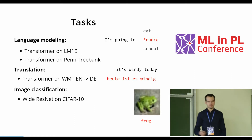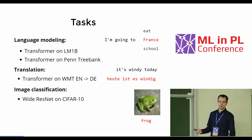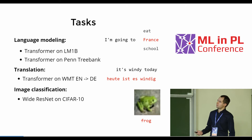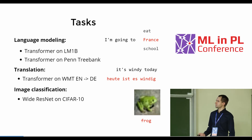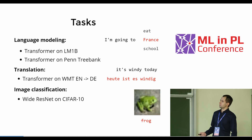Let's talk about the tasks we will benchmark our method on. We have two language modeling datasets — predicting the next word in a sequence. We will tune a transformer language model on the LM1B dataset which has one billion words, and also on the Penn Treebank dataset which has several million words. We will also tune a transformer on WMT English-to-German translation. And to show it doesn't only work with transformers, we will also tune the Wide ResNet architecture on CIFAR-10 classification.